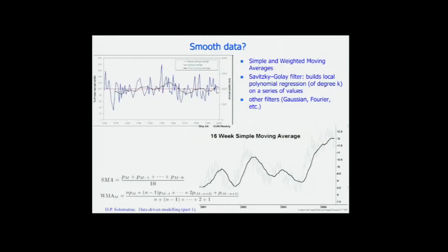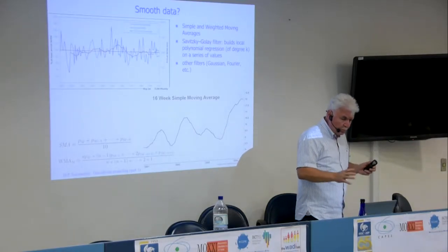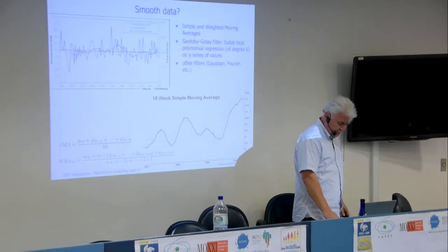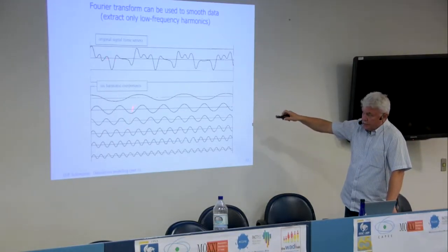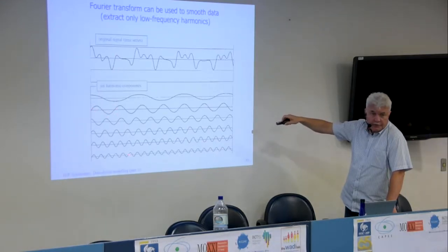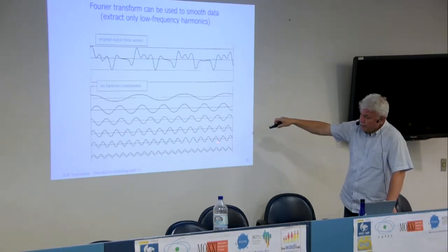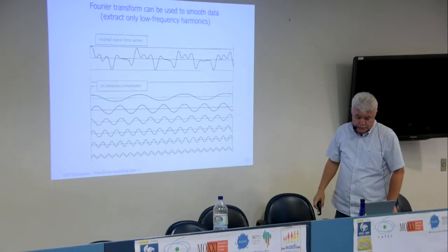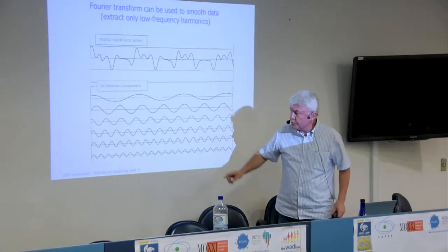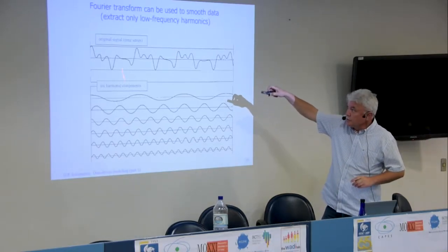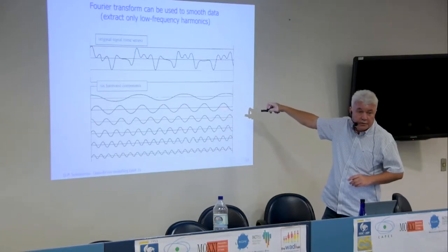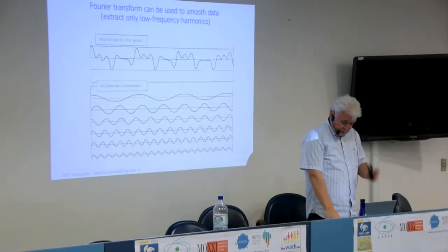Smoothing can be done using moving averages or weighted moving averages. With Fourier transforms, a signal is represented as a weighted sum of harmonic functions. If we remove high-frequency harmonics, we get smoothed data. In wavelet or Fourier neural networks, neural networks are built for different frequency components separately and then merged — this is an interesting idea because each sub-network then only needs to handle a simpler signal.